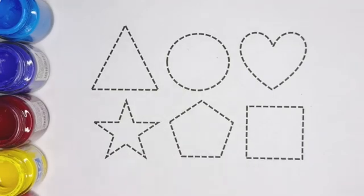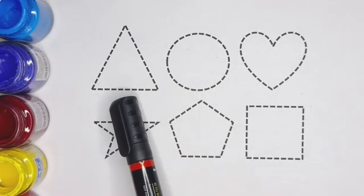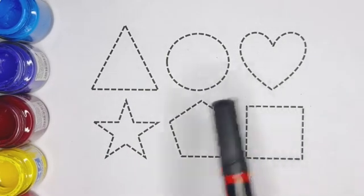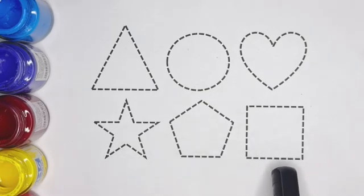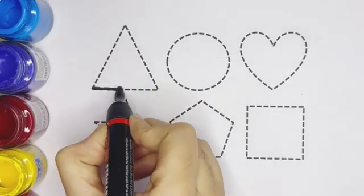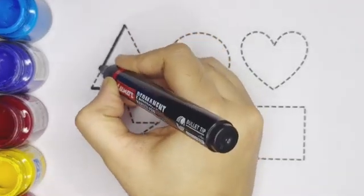This is black color. Triangle, circle, heart, star, pentagon, square. Kids, let's draw the shapes. Triangle, this is triangle.